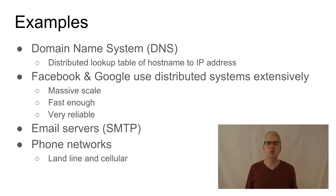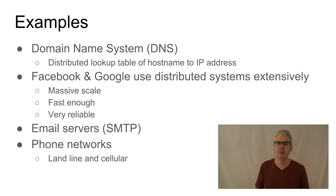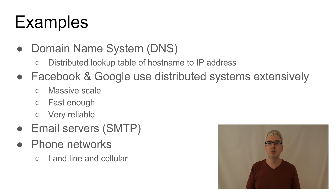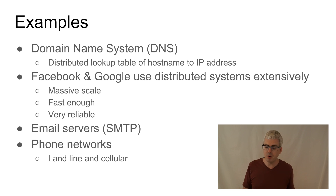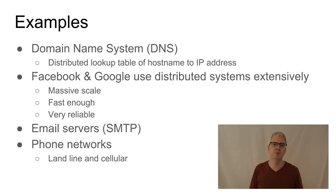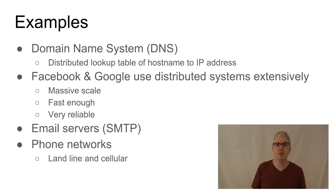Facebook and Google use distributed systems internally and extensively. They use them to store your data, to do processing of data over a large cloud of computers, and to run the serving systems you interact with on a daily basis. Both of these companies and more have proven that it's possible to build distributed systems at a truly massive scale that are fast enough to solve a large class of very important problems, and that they can be made extremely reliable.